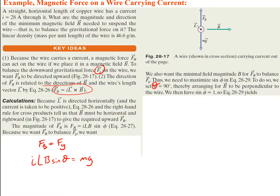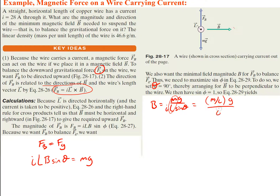With sine of 90 equal to 1, solving for B gives Mg divided by IL. Rearranging, this becomes (M/L) times g divided by I. Since we're given the linear density as 46.6 grams per meter, we can plug in that value directly without needing the length or total mass separately.